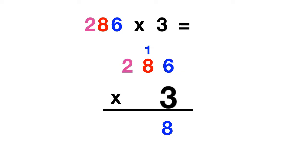Next we can multiply 3 times these 8 tens. Well, 3 times 8 is 24, but you have to remember to add in this 1. 24 plus 1 is 25, which we've also written by regrouping.